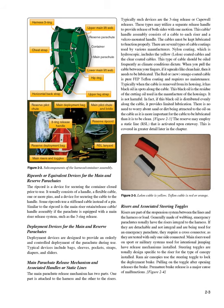Main Parachute Release Mechanism. The main parachute release mechanism has two parts: one part is attached to the harness and the other to the risers. Typically such devices are the three-ring release or capewell releases, which may utilize a separate release handle to provide release of both sides with one motion. The cable/handle assembly consists of a cable to each riser and a velcro-mounted handle. The cables must be kept lubricated to function properly. There are several types of cable coatings: nylon coating, which is hygroscopic, includes the yellow lowland coated cables and the clear-coated cables. This type of cable should be oiled frequently as climate conditions dictate. When you pull the cable between your fingers, if it squeaks like clean hair, then it needs to be lubricated.